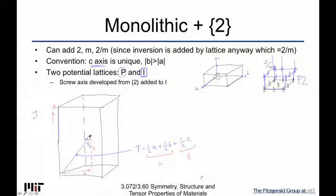Based on our previous work, if I have an element of a two-fold axis with an A_pi rotation and I have a perpendicular translation to it, remember that it induced another B_pi rotation. That's how we ended up with a two-fold axis at half T perpendicular in 2D.